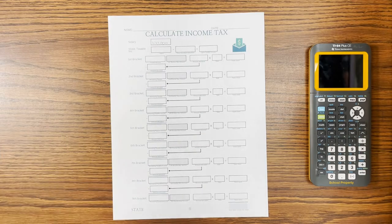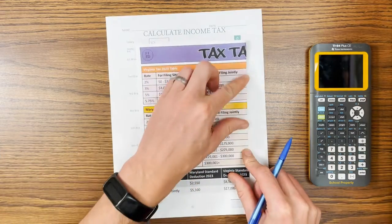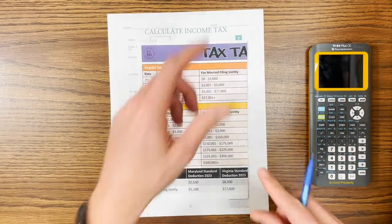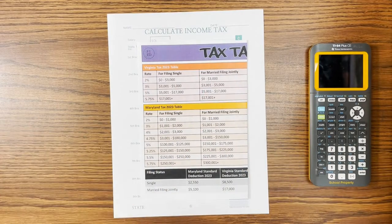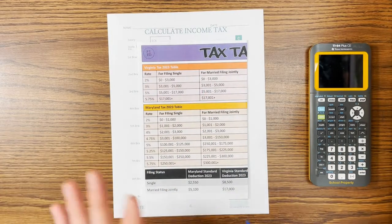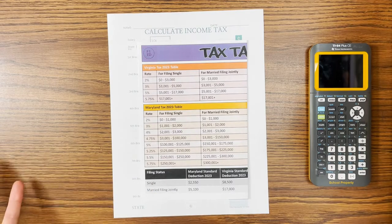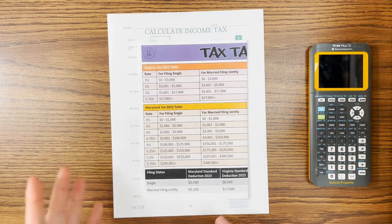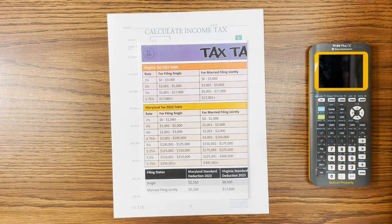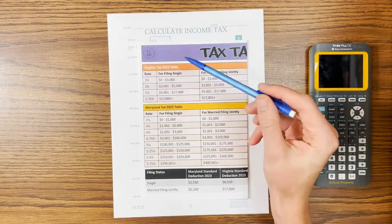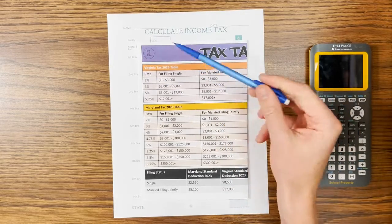If we take a look at the tax tables — and if you have these from the Calculate Net Pay resource, great, we can look at those. If you don't have them, go on to Google, search Virginia state income tax tables, and look for maybe the Virginia government website or maybe NerdWallet, which typically has really nice, easy-to-read tables. Virginia has a progressive tax system like our federal system.